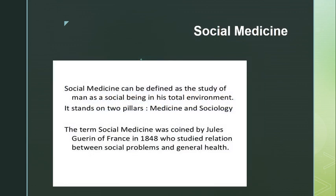Now let's go to social medicine. Social medicine can be defined as the study of man as a social being in his total environment. It stands on two pillars: medicine and sociology. The term 'social medicine' was coined by Jules Guerin of France in 1848, who studied the relation between social problems and general health. Sometimes the causes of social problems result from general health issues, and the general health of people leads to environmental damage.